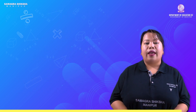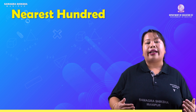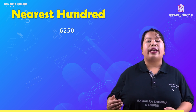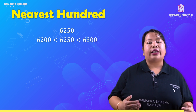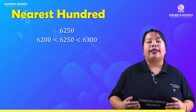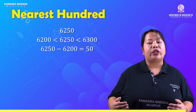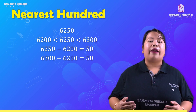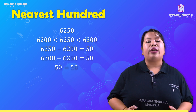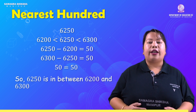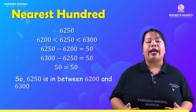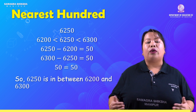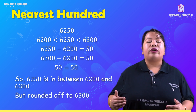Another example: 6,250 rounded to the nearest hundred. 6,250 is between 6,200 and 6,300. 6,300 minus 6,250 gives 50; 6,250 minus 6,200 also gives 50. Since 6,250 is exactly in between 6,200 and 6,300, and the ending number is 5, we round off to the higher value. Therefore, 6,250 is rounded off to 6,300.